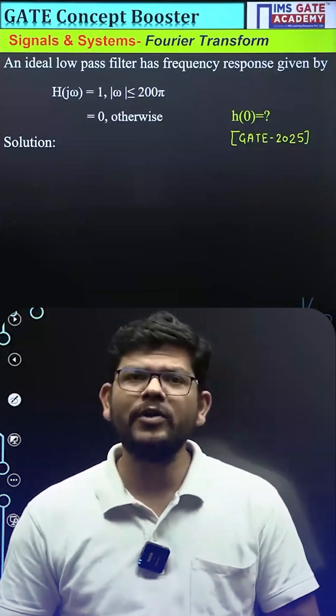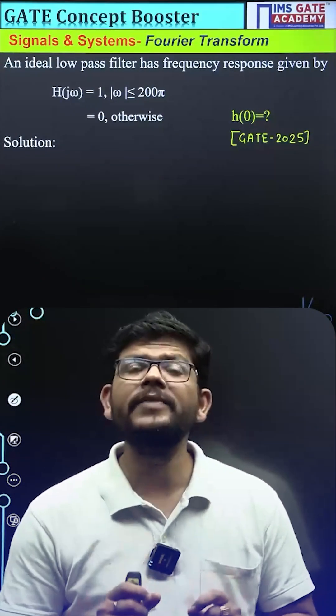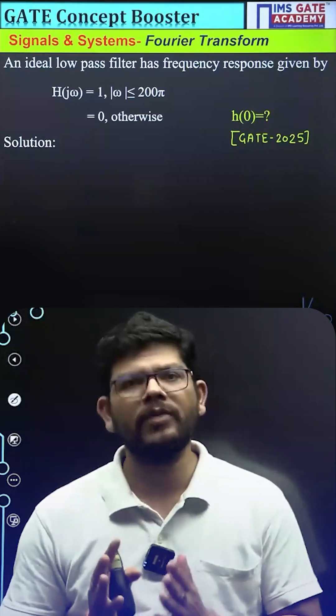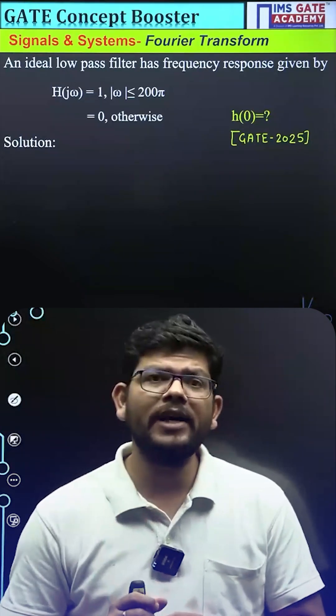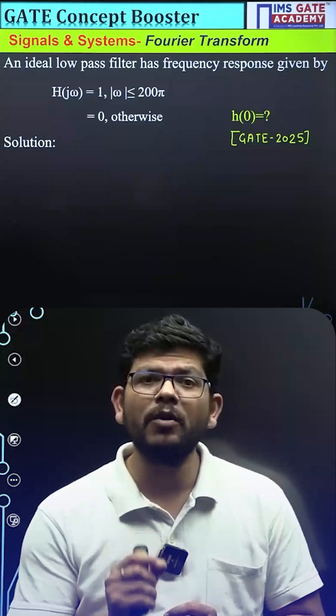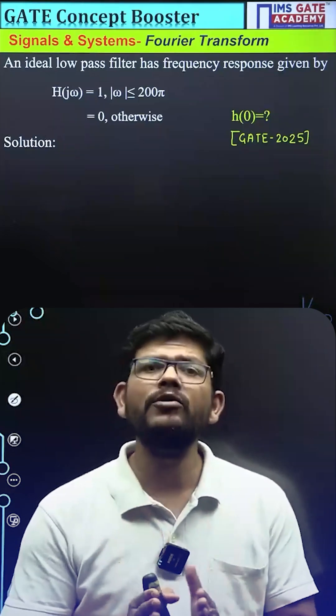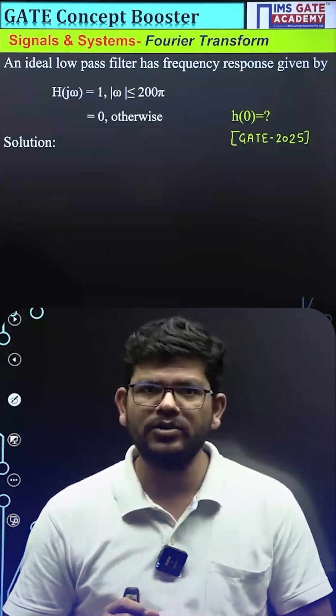Hi everyone, can you solve this GATE question of 2025 in which we have been given the Fourier transform of a filter and what we have to calculate? We have to calculate small h(0), means the value of its time domain function at t equals to 0.